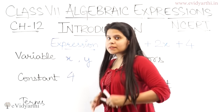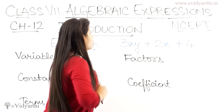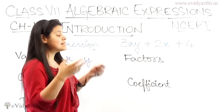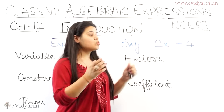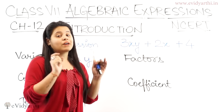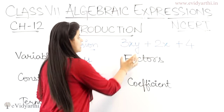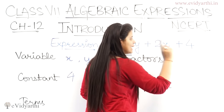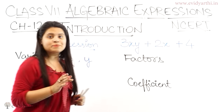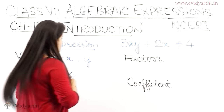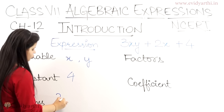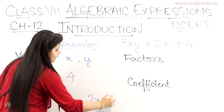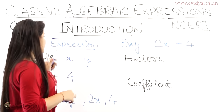Uske baad hai term. Term kya hota hai? Kisi bhi expression ke andar jab operations lagte hai — operations can be plus, minus, multiply, divide — uske alaawa jo combination hota hai, woh hota hai term. Jaise ki 3xy ek term hai, 2x ek term hai, 4 ek term hai. So yahan is expression mein terms hain: 3xy, then 2x, then 4.